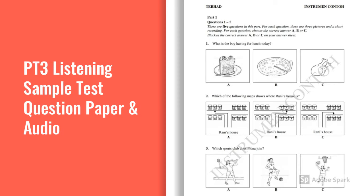Now open your question paper and look at part 1. There are 5 questions in this part. For each question, there are 3 pictures and a short recording. For each question, choose the correct answer A, B or C. You now have 20 seconds to look at the questions.